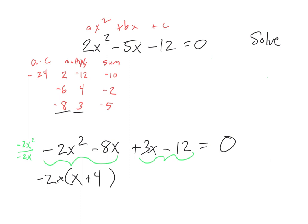Then for the second group — I took the negative 8x, divided it by the negative 2x common factor. Negative 8 divided by negative 2 is 4, x divided by x is 1, so I have 4 times 1, which is 4. Do the second two terms have a common factor? Yes — 3. When I divide 3 out of the 3x, I'm left with x. When I divide 3 out of the negative 12...